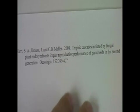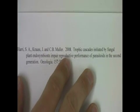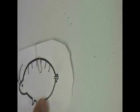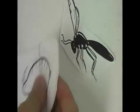These bottom-up effects were studied in 2008 in a paper in Ecologia by Harry et al., in which they looked at a poisonous fungus that grows inside of grass. The grass is then eaten by an aphid, which is then parasitized by a wasp.